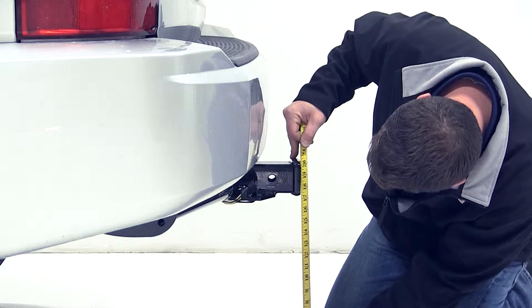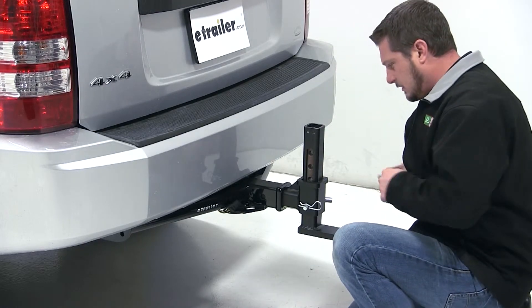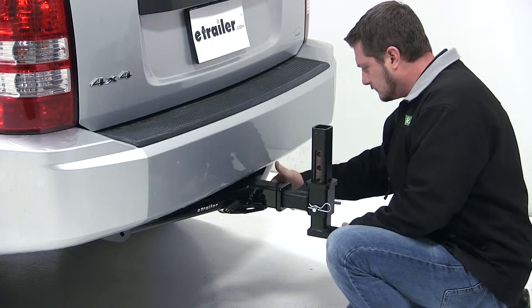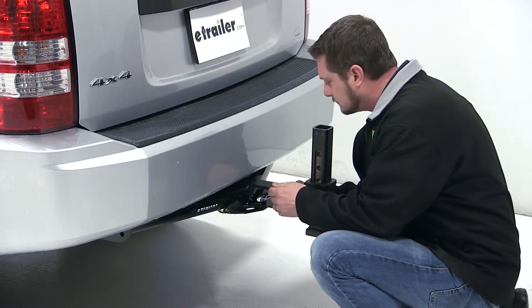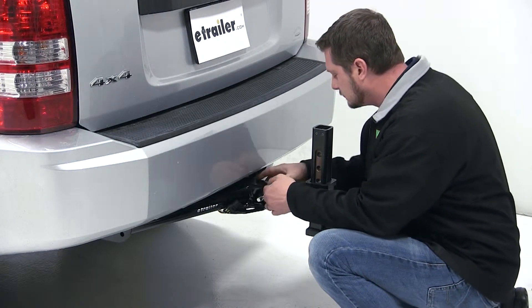We'll now slide the shank of the ball mount into the hitch, line up the hitch pin hole, and install our hitch pin and clip. This will secure the ball mount to the vehicle.